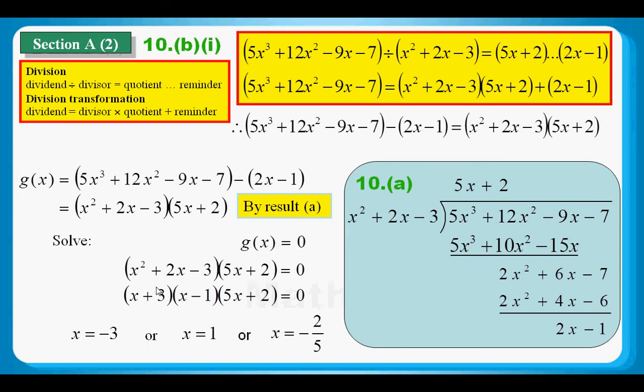Here, if we got three numbers times together and the result is zero, it implies that it may be the first factor is zero, or the second factor is zero, or the third factor is zero. If the third factor is zero, then x must equal minus three. If the second factor is zero, x must equal one. If the first factor is zero, then x must equal minus two over five. This is the end of the whole question ten.